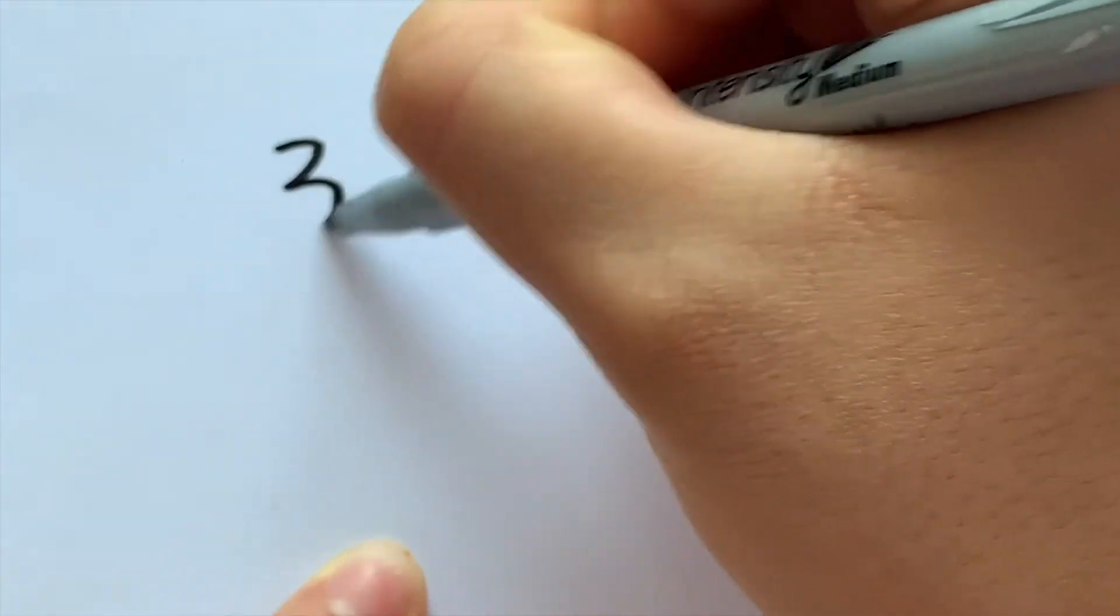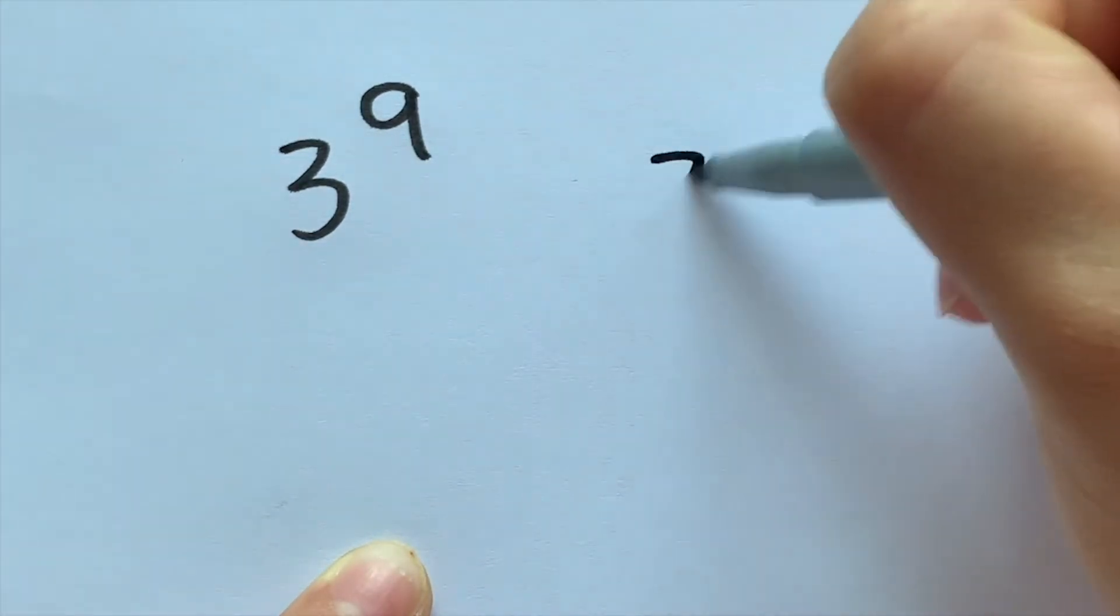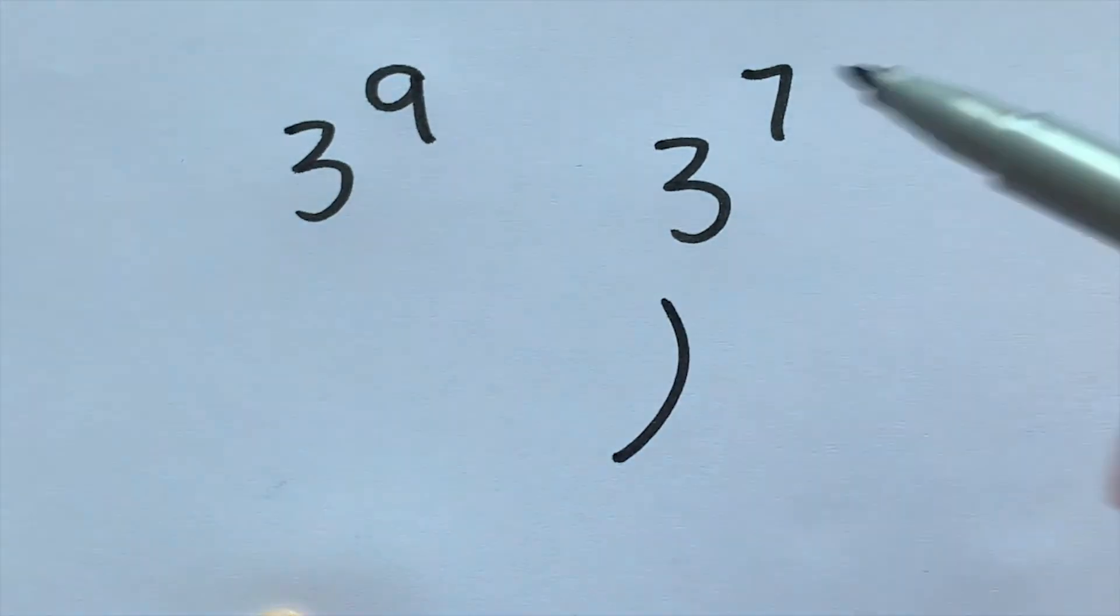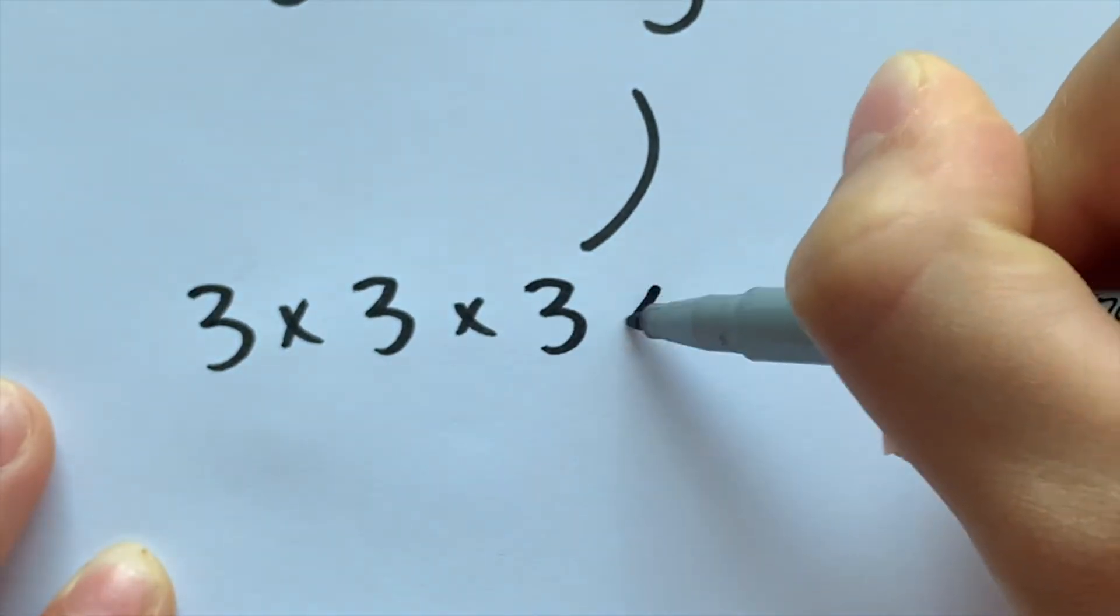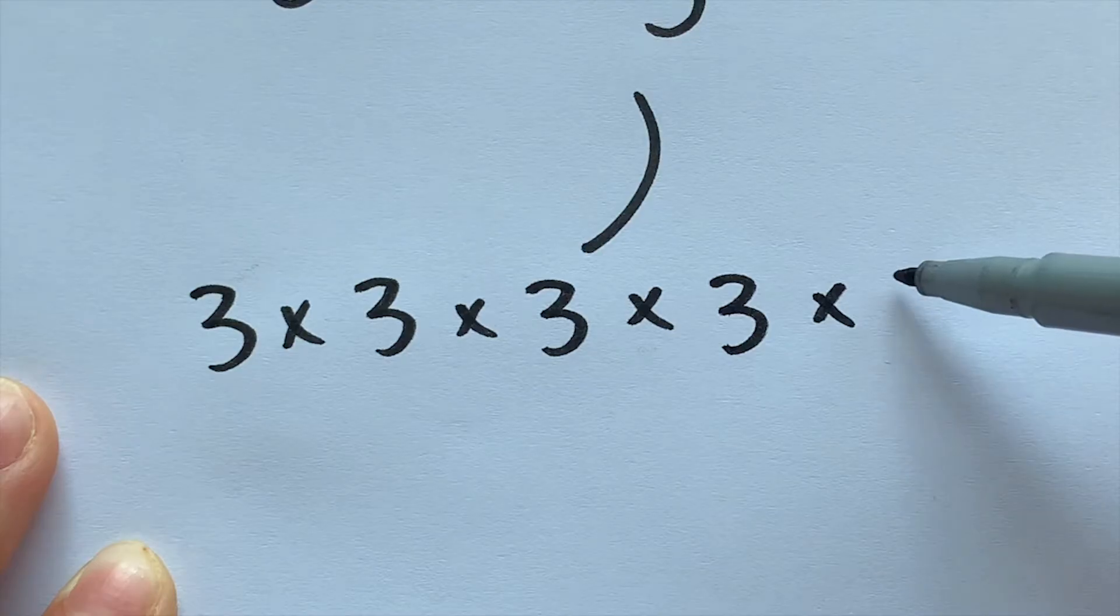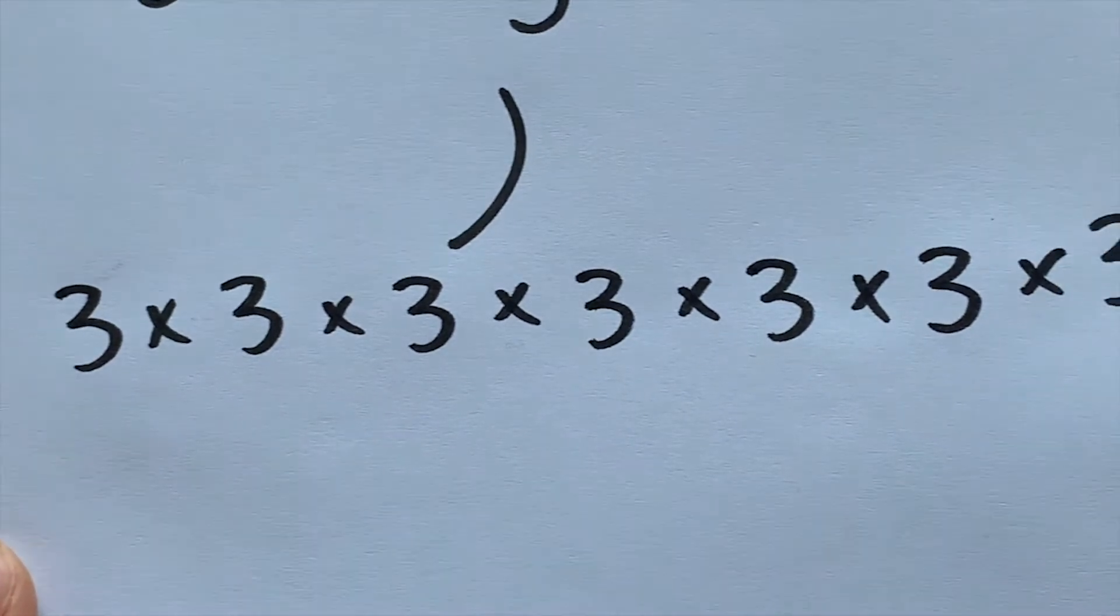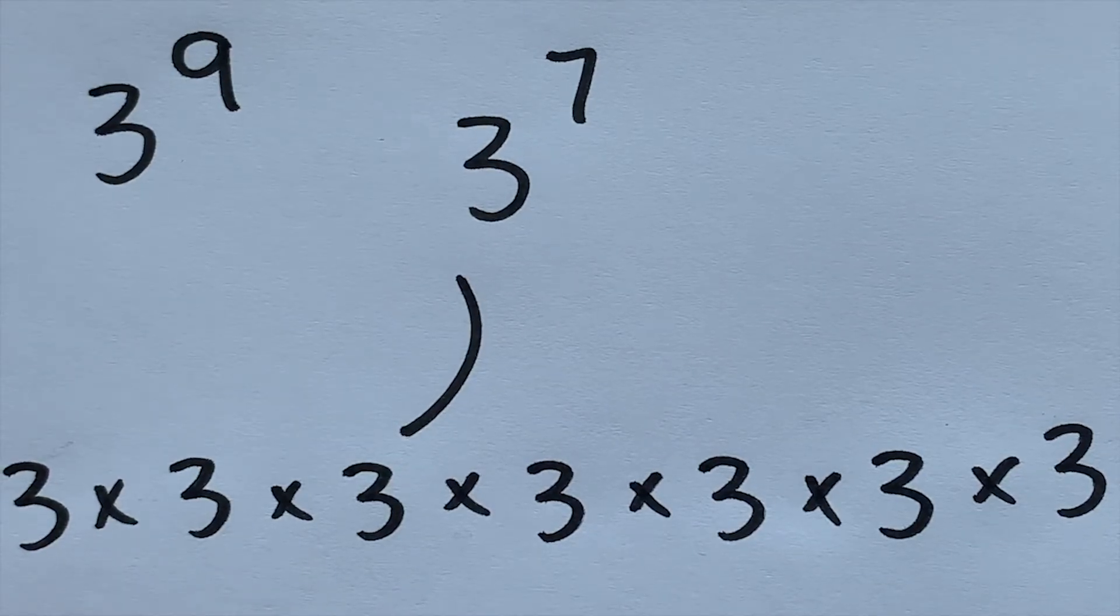Now there is no limit to what an exponent could be. So you could have an exponent of nine, or you could have an exponent of seven. And both of these things mean the same thing. So for this one, that means that we would multiply three by itself seven times. So one, two, three, four, five, six, seven. So that translates to that right there.